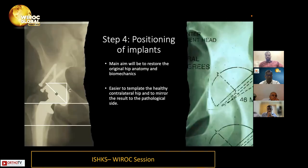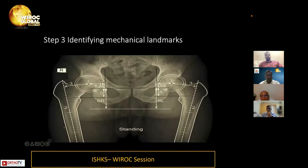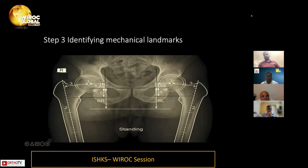Once you identify the anatomic landmarks, we must look at the mechanical landmarks — typically the femoral offset and the acetabular offset on their respective sides, the neck length, and similarly the center of rotation of the femur and acetabulum.